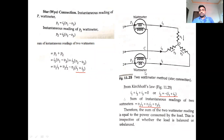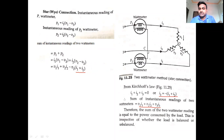In the two-wattmeter method, wattmeter 1 is connected to line 1, wattmeter 2 to line 2, and the common point of the voltage element is connected at a particular point. We then analyze what happens to the instantaneous power rating.